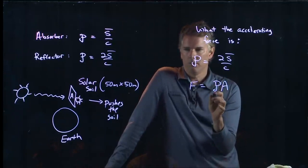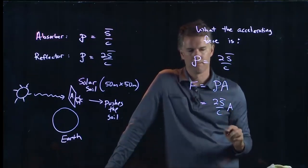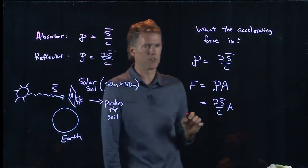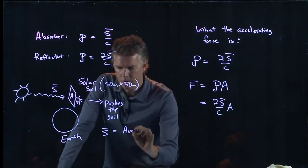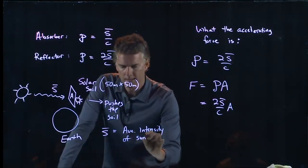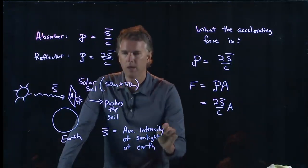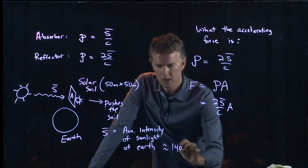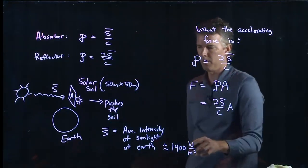Do we know what S bar is? Well, S bar is related to this electromagnetic wave that's coming in. And so S bar is the average intensity of sunlight, basically where the Earth is located. And we know what that is. It's roughly 1,400 watts per square meter.